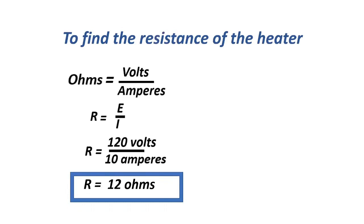To find the resistance of the heater, ohms equals voltage over amperes, or R equals E over I. That equals 120 volts over 10 amperes. Our resistance is 12 ohms.